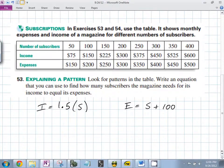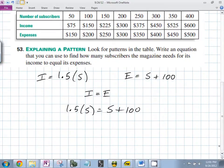So you want to know when income equals expenses. You want to know when I is equal to E. So that's going to be when 1.5S is equal to S plus 100. So that's when 0.5 or a half S is equal to, I subtracted S from both sides. What's that going to make the right side?